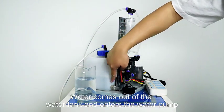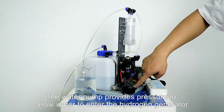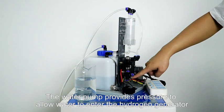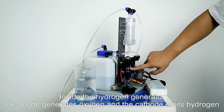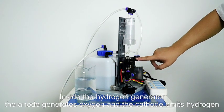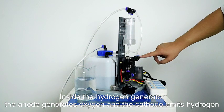Water comes out of the water tank and enters the water pump. The water pump provides pressure to allow water to enter the hydrogen generator. Inside the hydrogen generator, the anode generates oxygen and the cathode emits hydrogen.